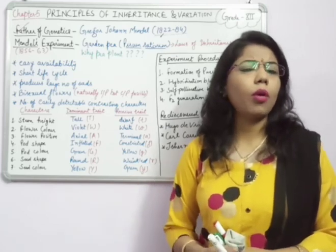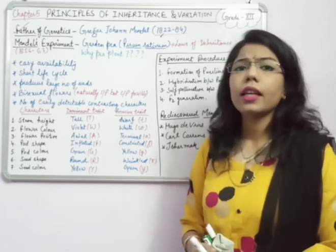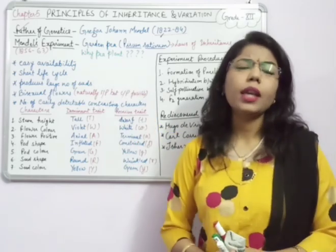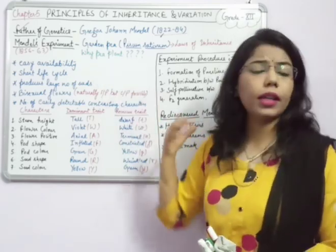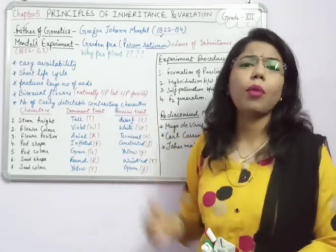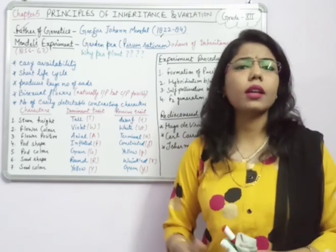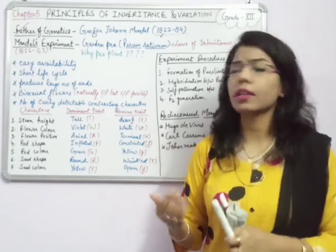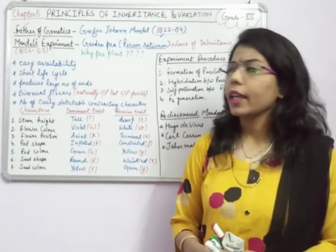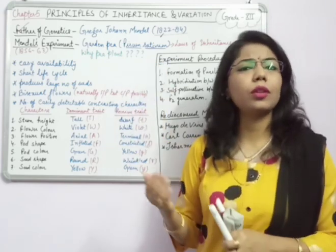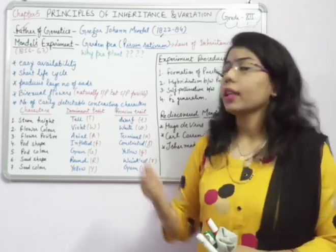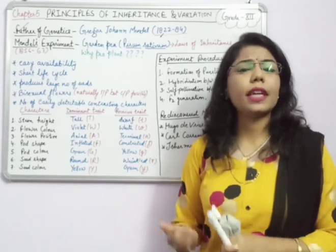Mendel was interested in the biological field. During his time as a monk, he conducted experiments in his garden on pea plants. Before that, he went to the University of Vienna in 1851 and spent almost two years there, where he obtained a degree in natural science as well as mathematics.